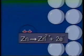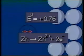Hydrogen ions are gaining electrons and forming hydrogen atoms. In the zinc half-cell, atoms are being oxidized to produce ions. Here is the oxidation equation and its half-cell potential.